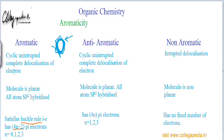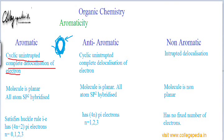Any molecule satisfying these two criteria — planarity and Hückel's rule — will have cyclic, uninterrupted, complete delocalization of electrons and will be aromatic. To visualize aromaticity, we visualize a ring in which there is an ongoing complete uninterrupted cyclic delocalization of electrons. If this happens, there is aromaticity.